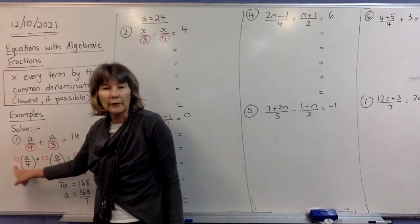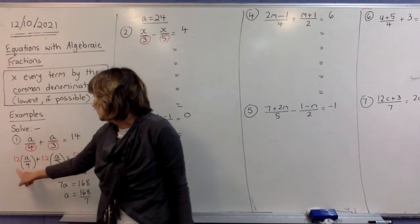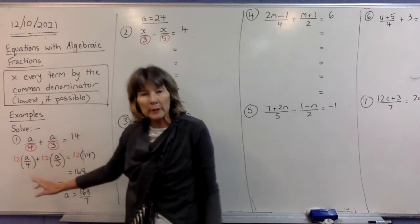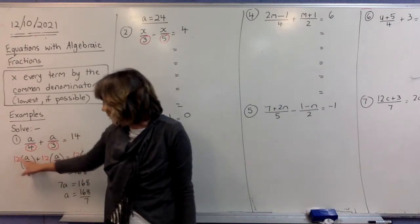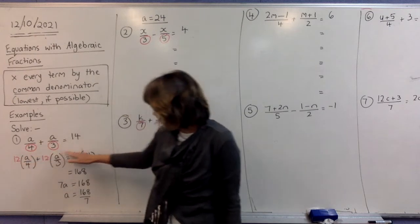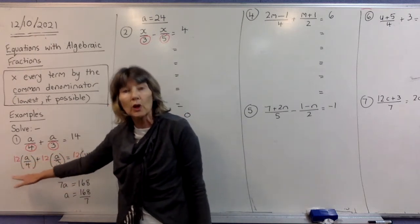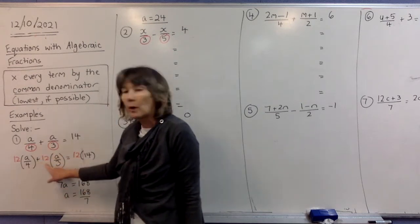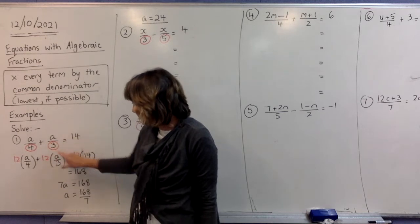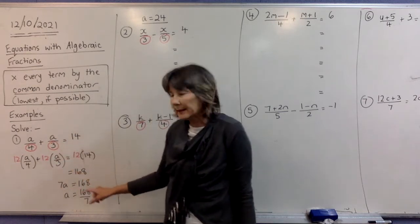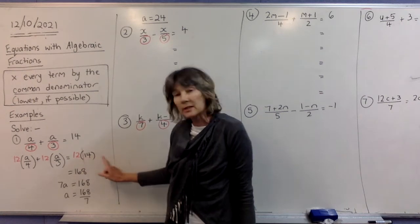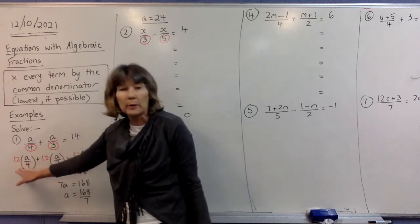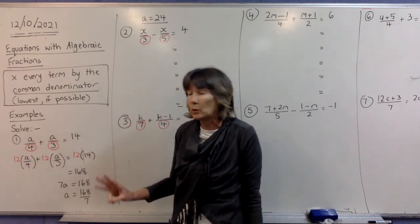We write the 12 — I've written it in red pen so it stands out — in front of the first term and put that term in brackets. When you're doing this, make sure that the 12 lines up at the top of the fractions, right across the denominators. Then copy the plus, write the 12 again outside the next term in brackets, keep your equals under equal signs, then your 12 outside the last term in brackets. We're just putting a 12 in front of all three terms in the equation.